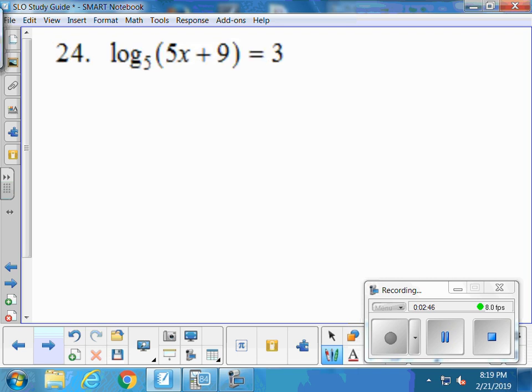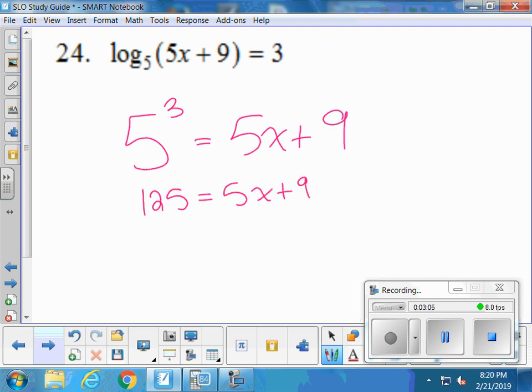All right, number 24 we're going to hit it up with the left right center. The guy on the left, the little guy's your base, and the number on the right is going to be the exponent, and then the center is 5x plus 9, that's the answer. Figure out what 5 to the third is, 125. Finish it off by subtracting 9 over to the left hand side, 116, and then dividing both sides by 5, you get 23.2.